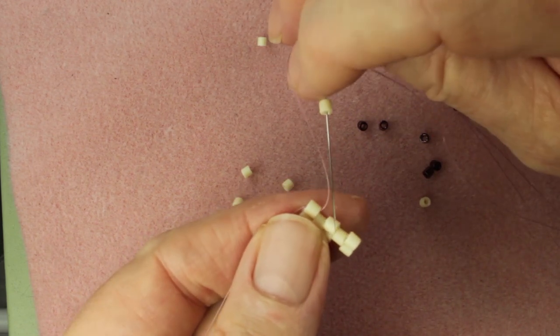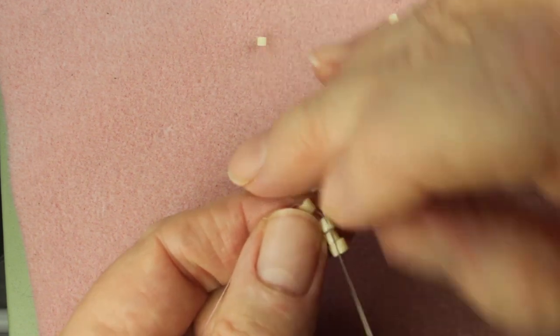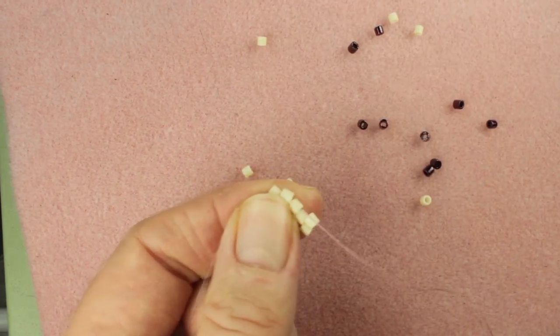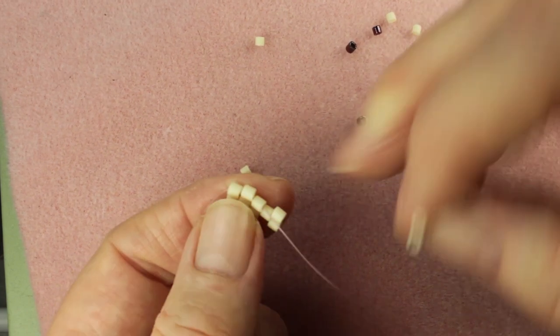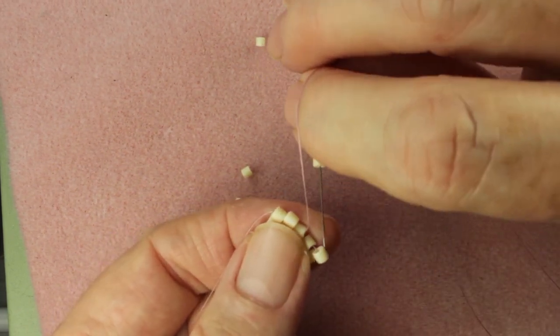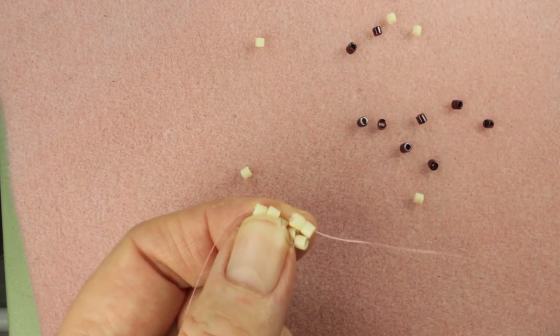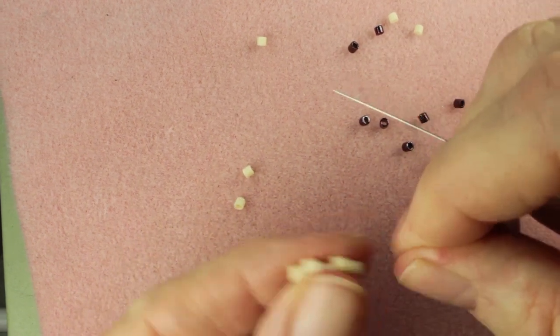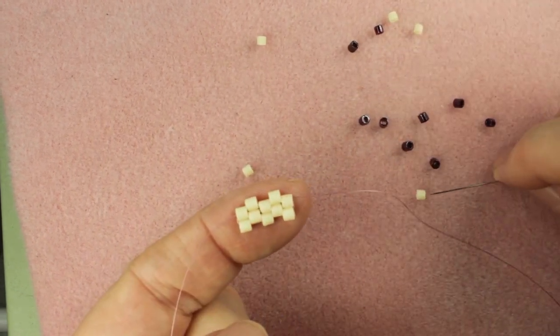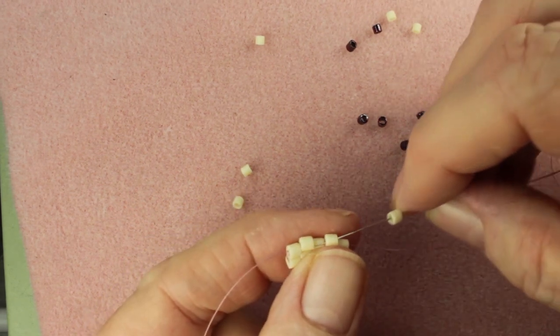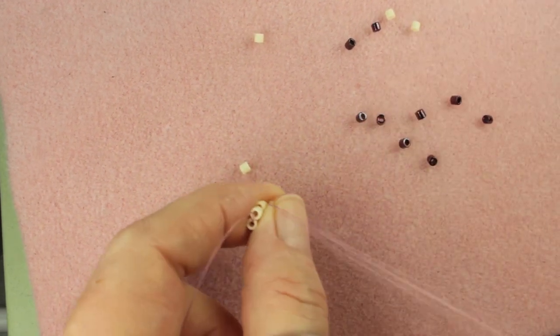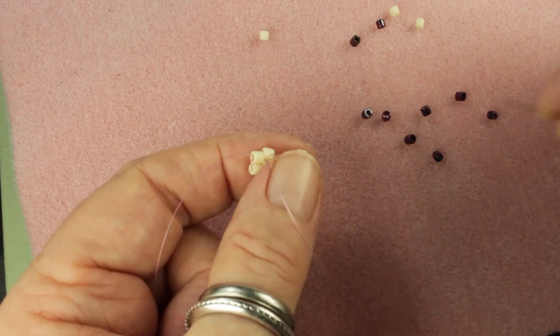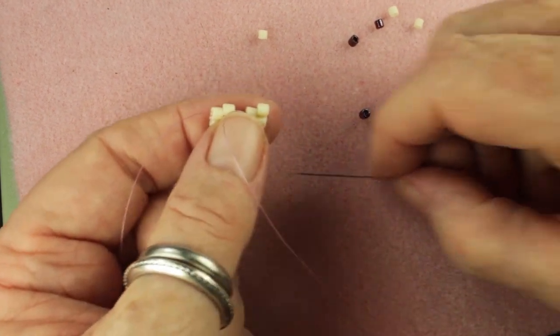Right now I have 8-0 delicas, so it's pretty wobbly with the thread. That's why it's not holding very tight. Let me go one, two.